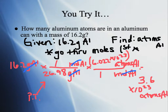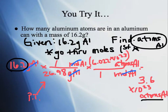Let's do a quick check: units give us atoms of aluminum — exactly what we need. For sig figs, we start with 3; the calculator gives 3.6158, so we round to 3.62 — three sig figs, correct. Does the number make sense? We multiplied 6.02 times 10 to the 23rd by 16 to get a bigger number than Avogadro's number, then divided by 26, ending up with the same exponent but a smaller front number. So 3.62 times 10 to the 23rd is reasonable.